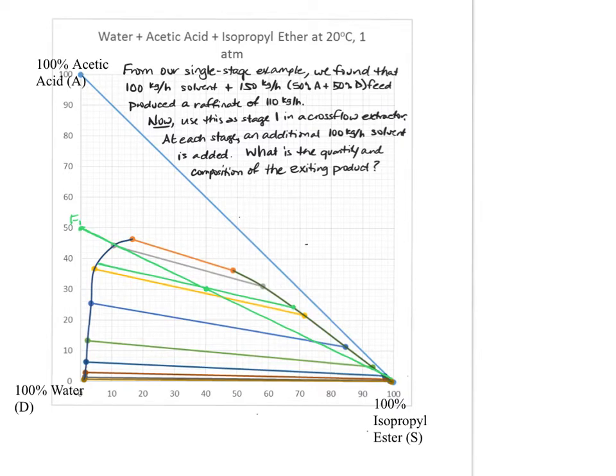This was our solvent for step one. And we found this mixture. This was the raffinate. R for raffinate. And this was our extract. So what we're going to do now is we are going to extend this concept to a cross flow extractor. So this was really stage one for our cross flow extractor. What we're going to do now is we're going to take this raffinate and we are going to feed it to the next stage. So this is going to become the feed to stage two.